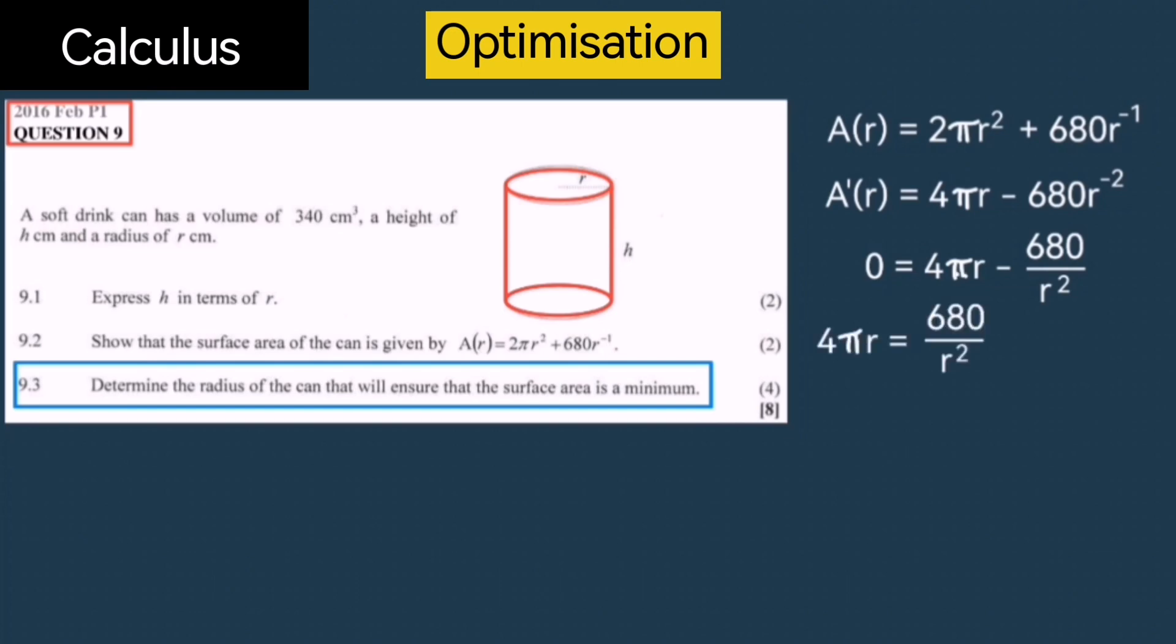Now take it over to the other side. So we have 4π R = 680 / r². Then cross multiply. Multiply 4π R times r² and we get 4π r³. Then multiply the 680 by 1. Divide by the 4π. 680 divided by 4 is 170, so we have 170 / π. Then we can take the cube root on both sides and R = 3.78 centimeters. That's the radius of the can that will ensure that the surface area is a minimum.